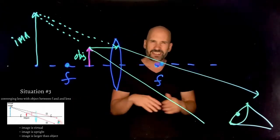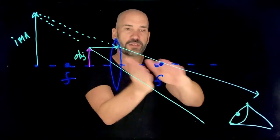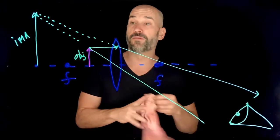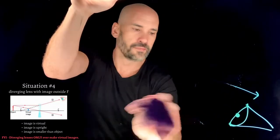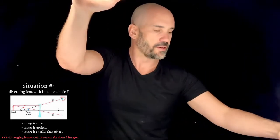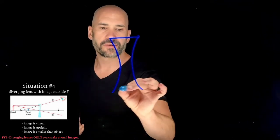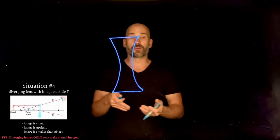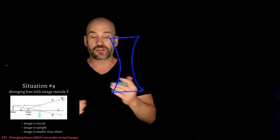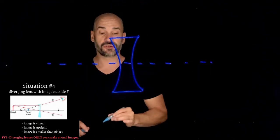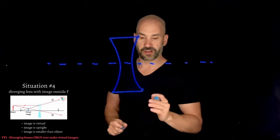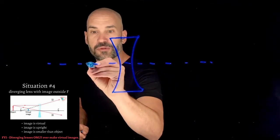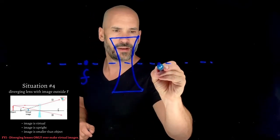What we've created here is a magnifying glass. That's situation number three. Now situation number four uses a diverging lens. If a diverging lens makes light diverge, can it ever form a real image? To form a real image you need actual light rays converging, and a diverging lens will never get light rays to converge.